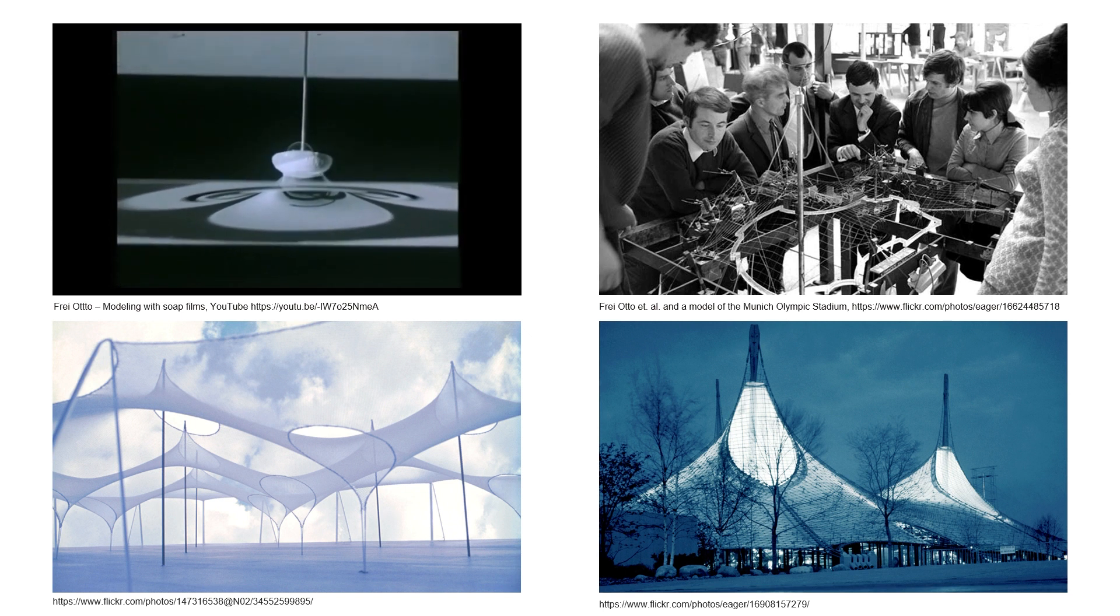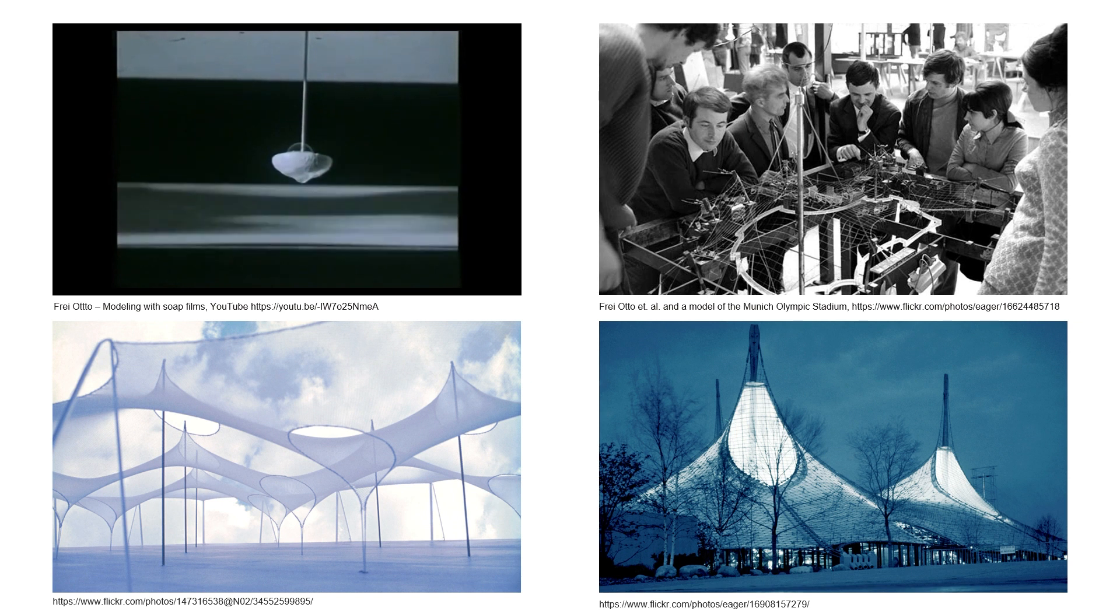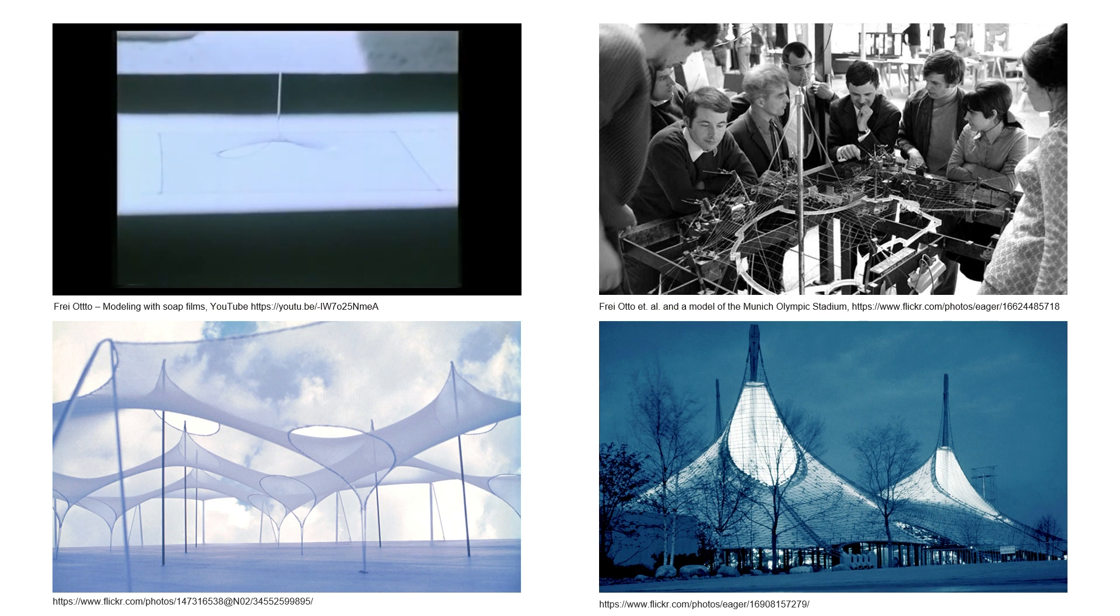He used to materialize his soap film models using equal mesh nets. Equal mesh nets have quadrilateral faces whose sides are of equal length but the faces need not be squares. However, it is only possible to approximate a minimal surface with an equal mesh net.